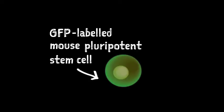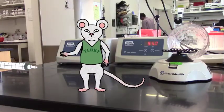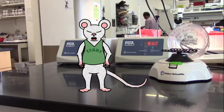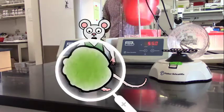We start our teratomas with GFP-labeled mouse pluripotent stem cells. GFP makes the donor cells green, so we can distinguish cells that we put in from cells that are already in the recipient mouse. We introduce the labeled pluripotent stem cells into the leg muscle of an immune-deficient mouse. After about three weeks, teratomas form, and we open them up to look for skeletal muscle cells.